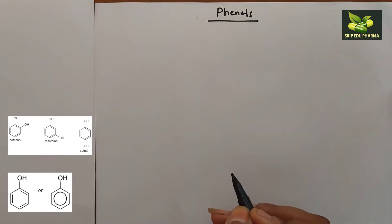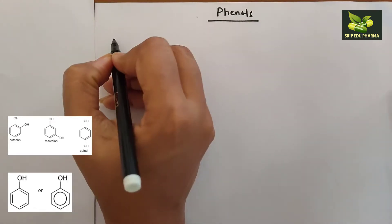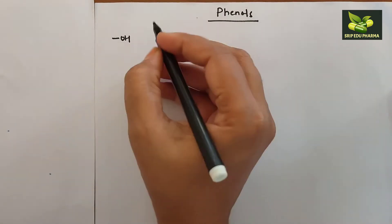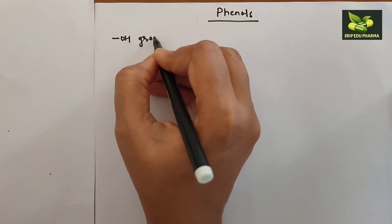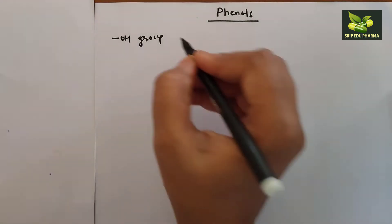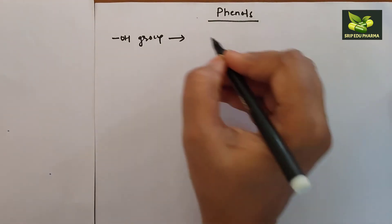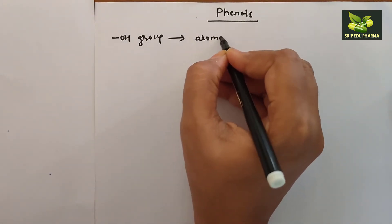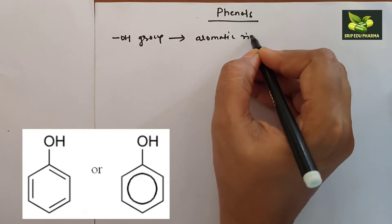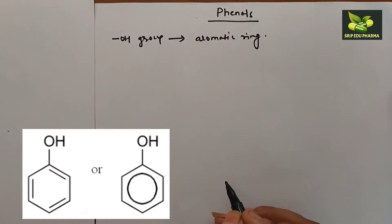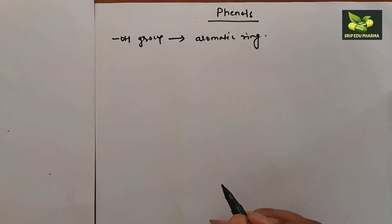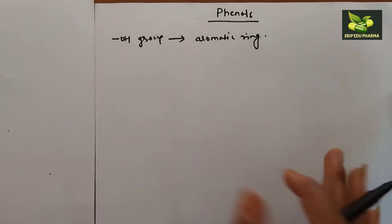So what are phenols? Basically, phenols are compounds containing an OH group which will be attached to any aromatic ring. For definition, phenols are the compounds containing an OH group attached directly to an aromatic ring. These are called phenols.